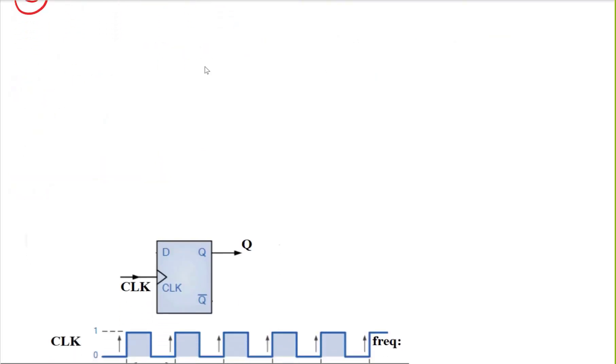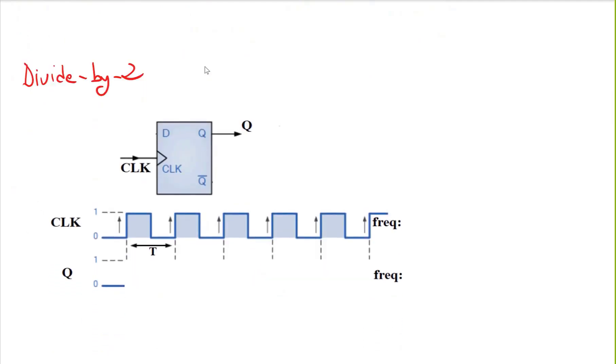The first one we will see is a divide-by-2 counter, or you can call it a modulo-2 counter. This is a very simple counter. What we are trying to do in a modulo-2 counter is count from zero, one, then go back to zero, one - so it's like toggling at each clock cycle.